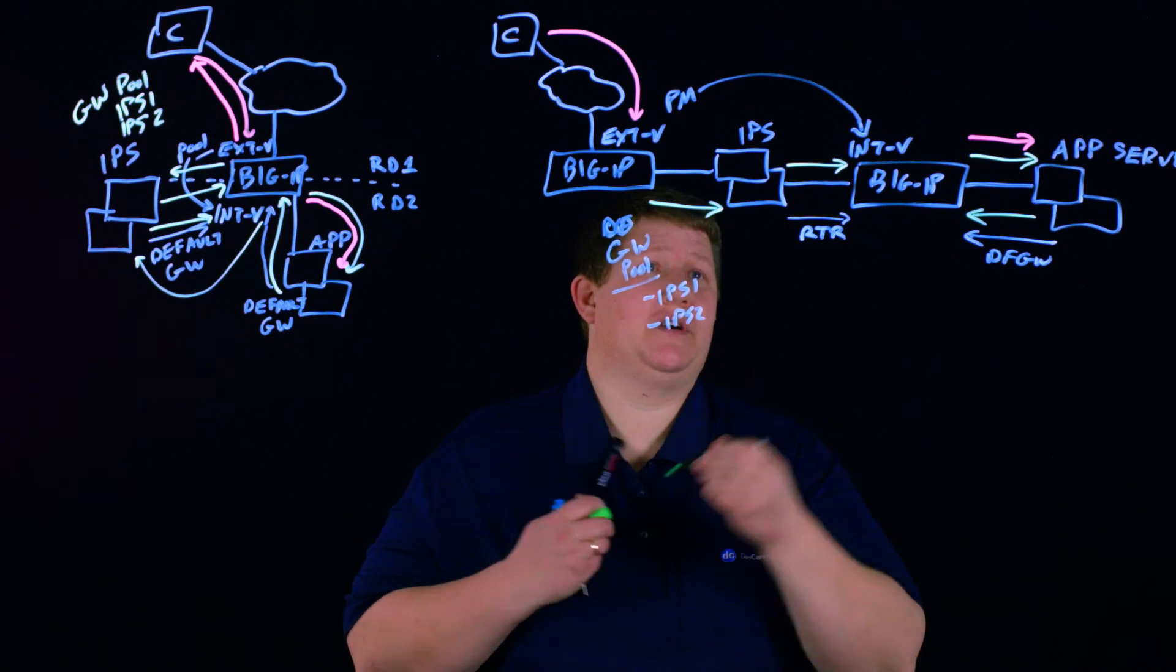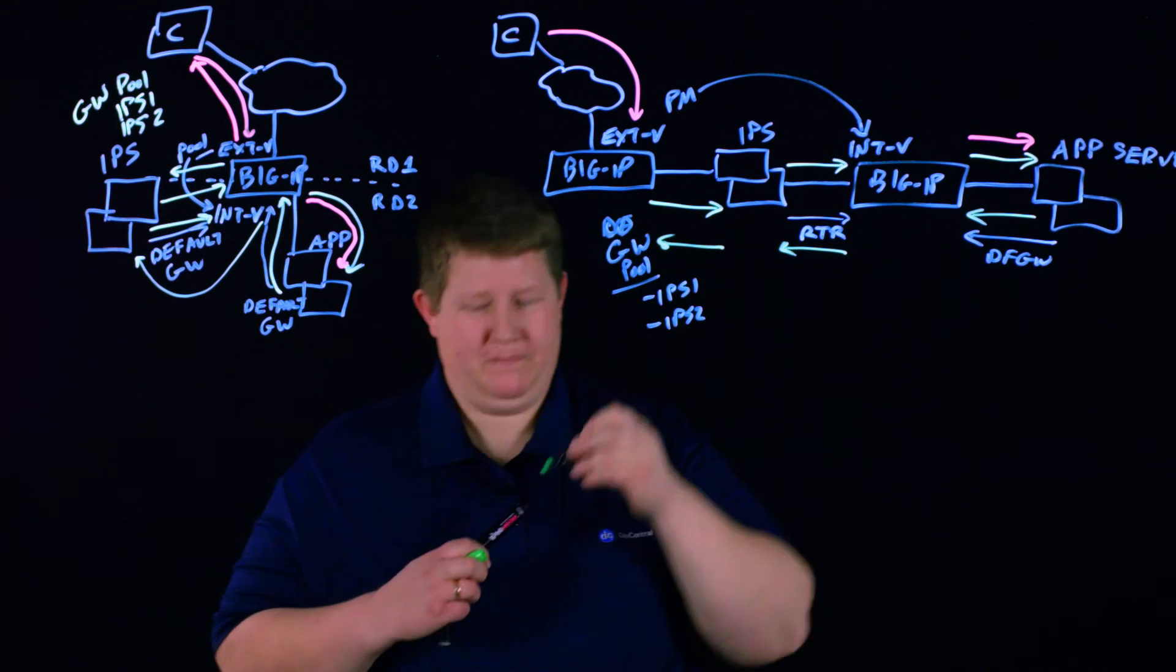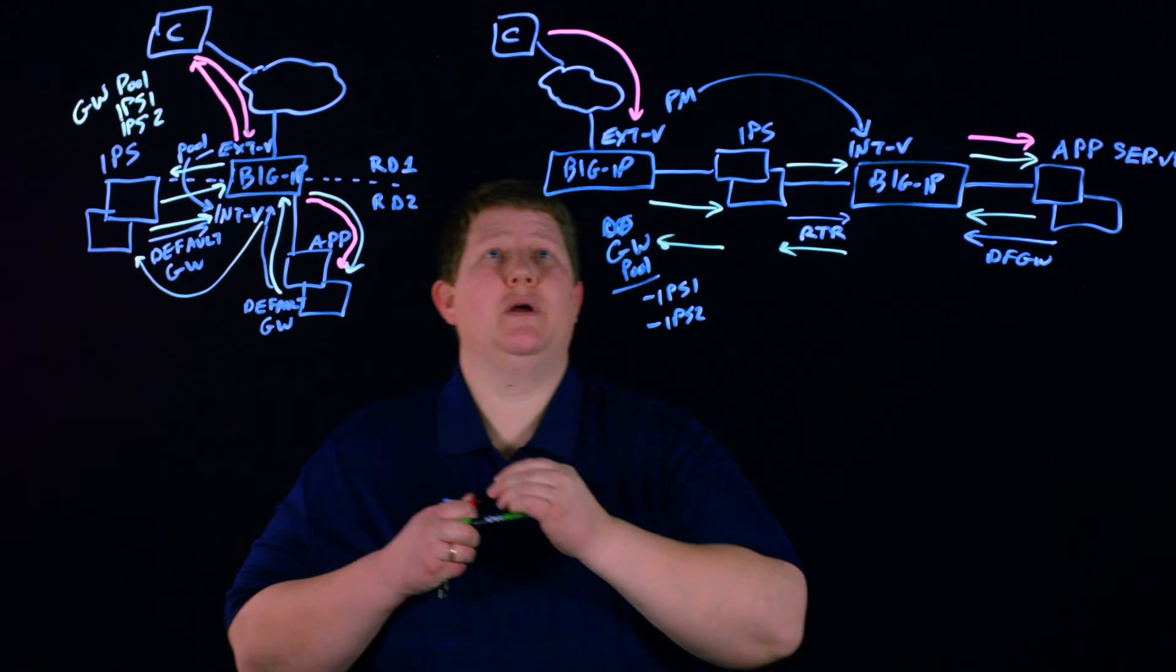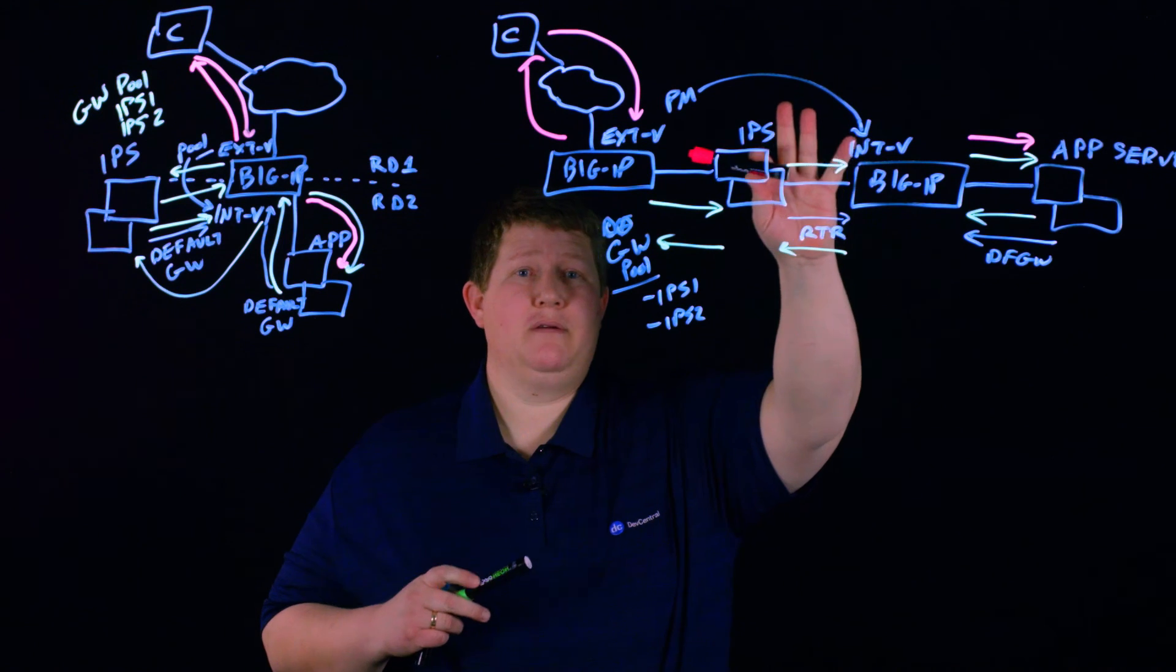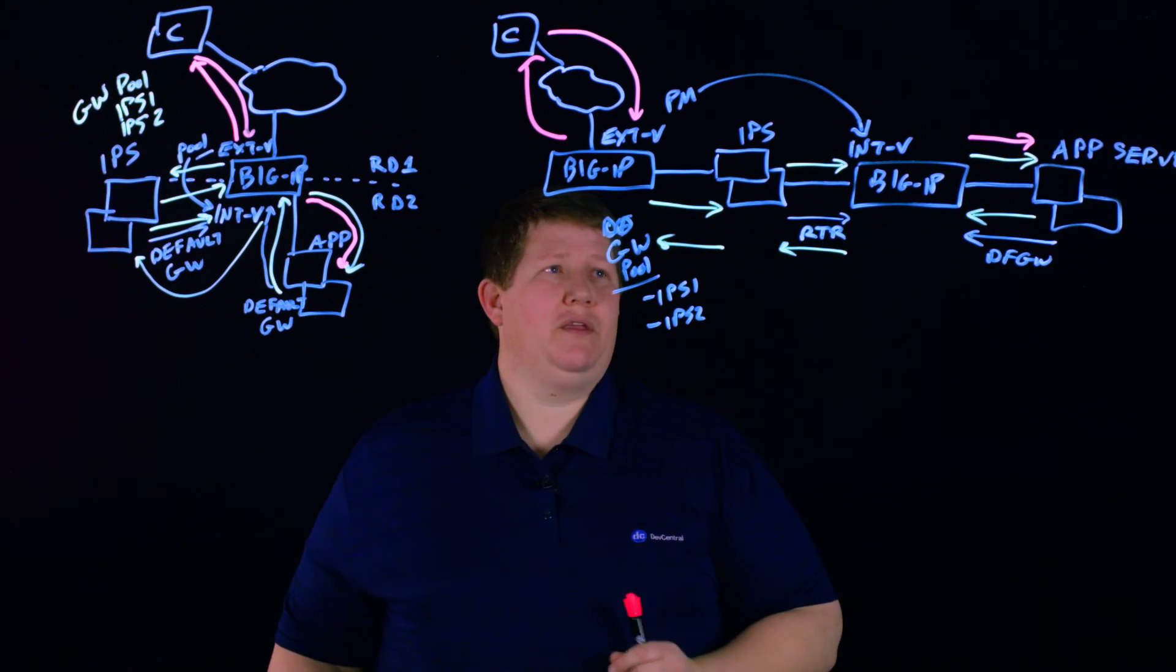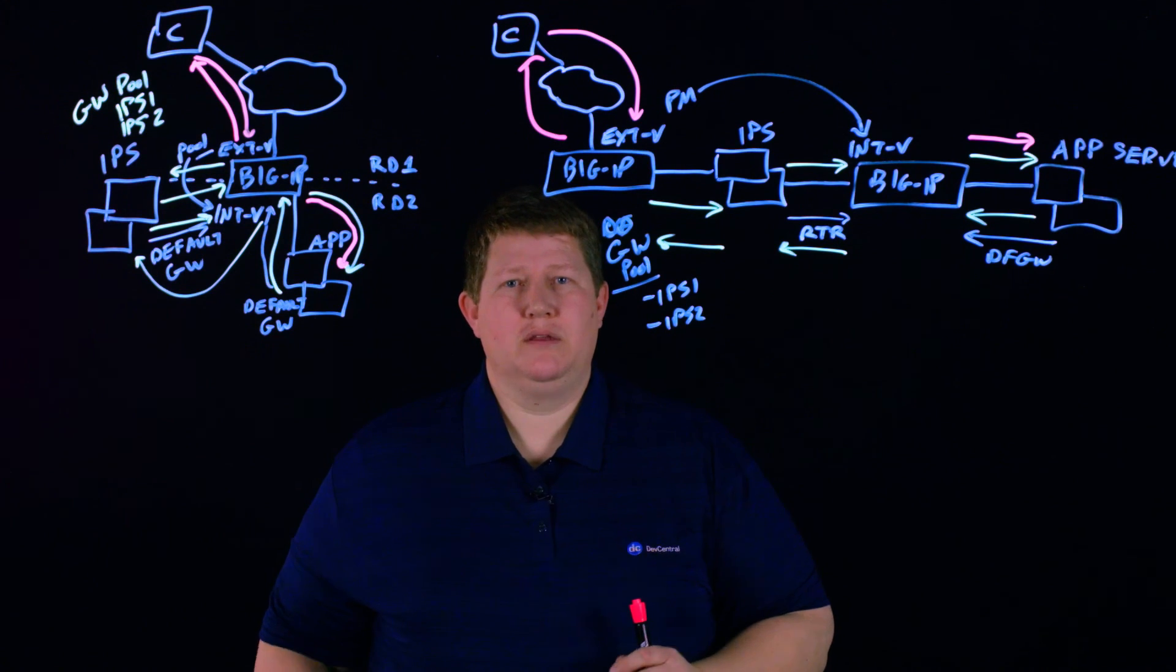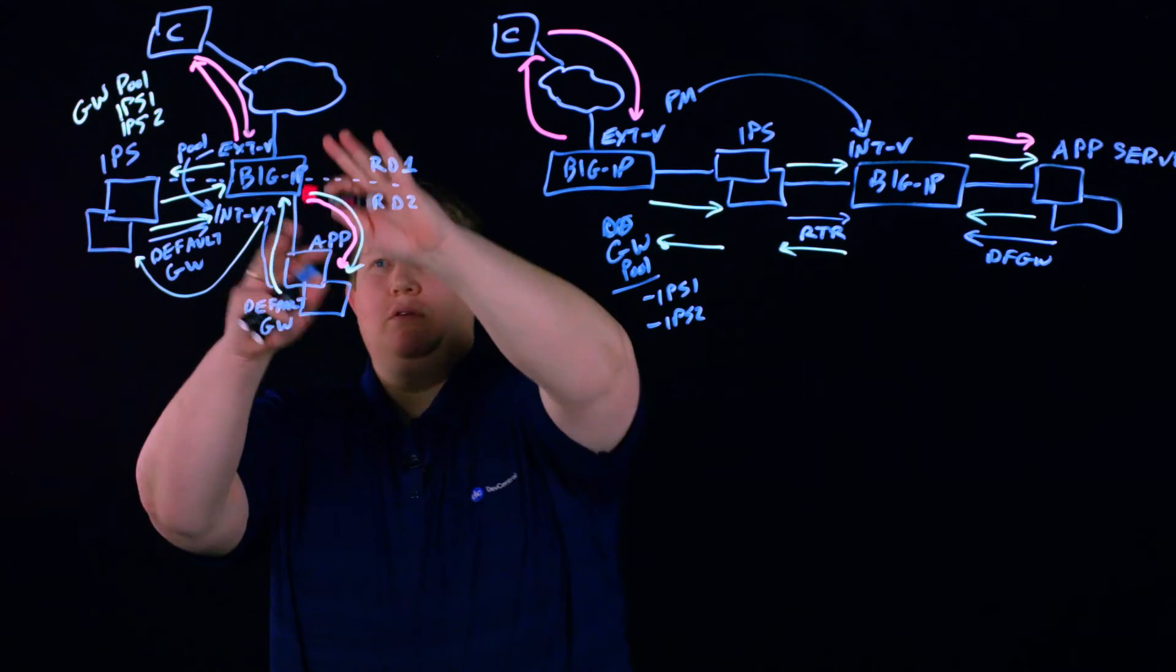By default gateway, it will forward that back to the BIG-IP. BIG-IP has auto last hop to be able to return that traffic. Again, IPS just acts as a forwarder, and then BIG-IP will re-encrypt that and send it on. In this scenario, you don't need the route domains because of the separation that you have between the security zones, and the BIG-IPs are isolated.